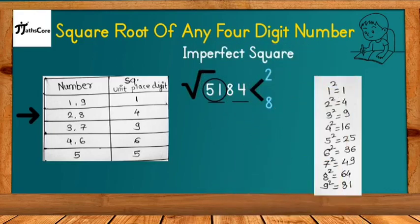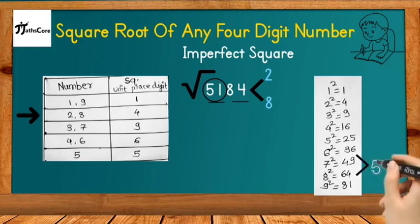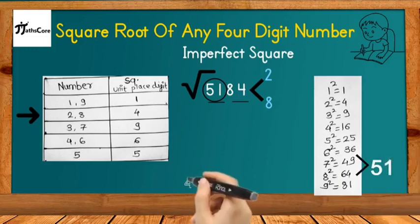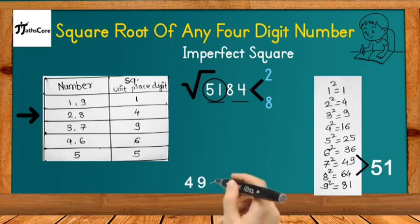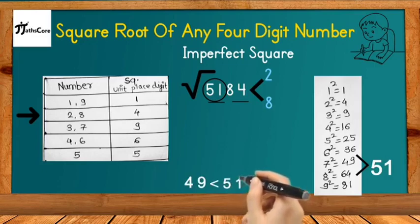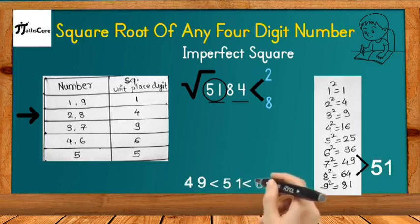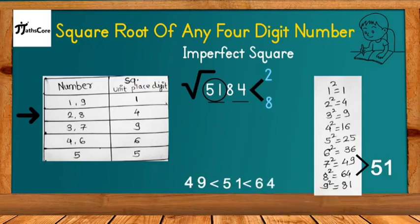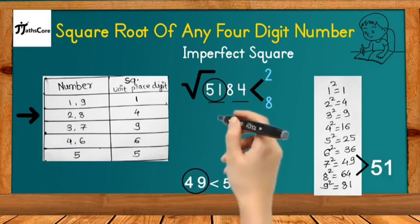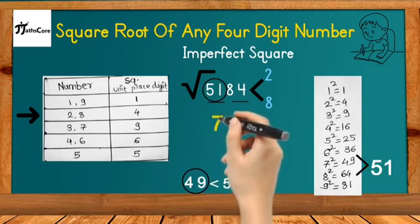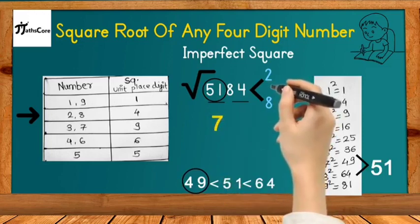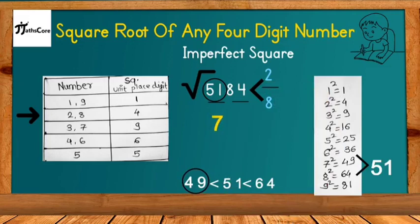Now focus on 51, which is not a perfect square. Find which two perfect squares 51 lies between: 7² = 49 and 8² = 64. So 51 lies between 49 and 64: 49 < 51 < 64. We select the lesser perfect square, which is 49, and its square root is 7. So 7 is the tens place digit of the square root of 5184.